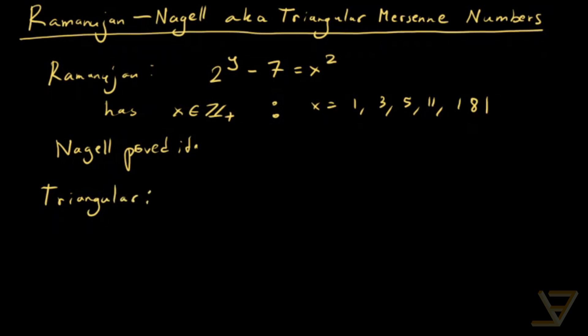So, a triangular number is like this: 1, well, 0 is also a triangular number. So 0, 1, 3, 6, 10. They're of this form: 1 plus 2 all the way through to n, which equals n times n plus 1 divided by 2.